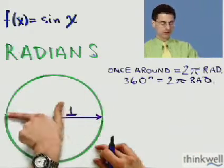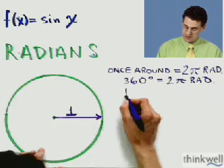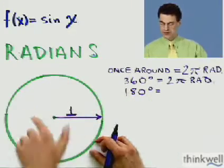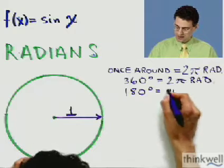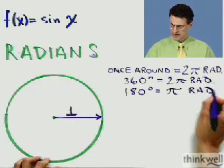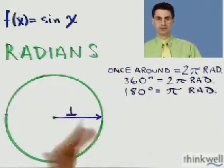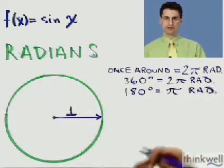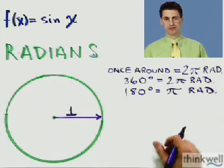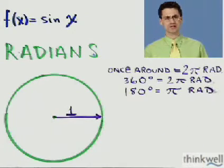What would be halfway around? Well, halfway around would be 180 degrees. And that would be, well, half of 2π would be just π. So, 180 degrees equals π radians. This is just a conversion from one unit to another. It's like metric to feet and yards and so forth. What do we call that? Is it British or English? English.